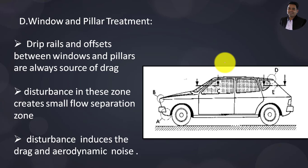The last one is window and pillar treatment. Drip rails and offsets between windows and pillars are always sources of drag. These offsets create disturbance in airflow and produce small separation zones.